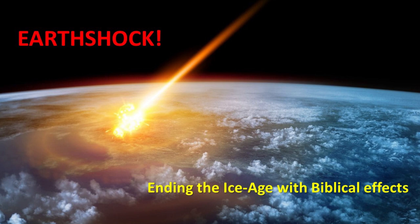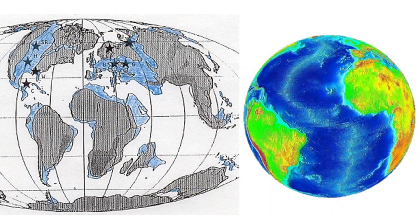That axis tilt had to be corrected, and it was, by another series of smaller asteroid impacts. It is because of this earth shock ending the Ice Age that we also have the answer to three biblical events that have puzzled people for years. Because we are covering so much material, this will be a two-part series. The Ice Age started after the third major catastrophe in the geologic column, the KT or Cretaceous Tertiary extinction.